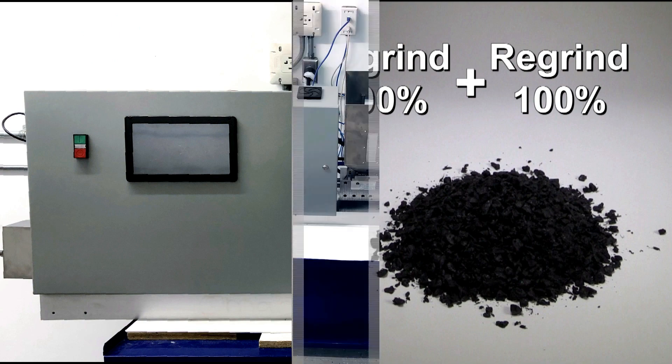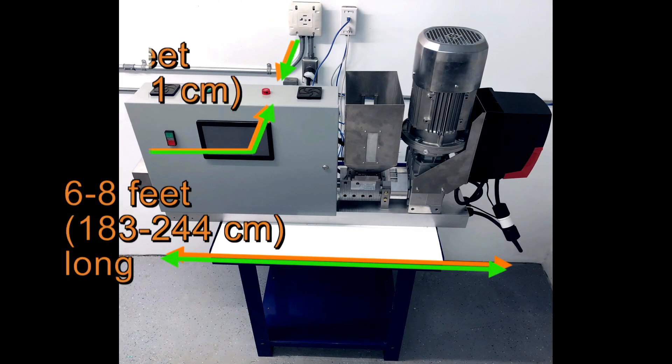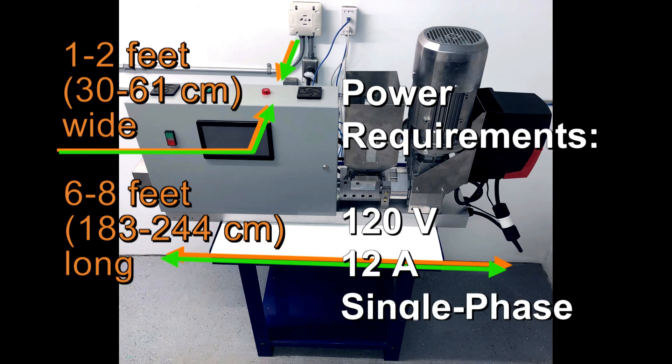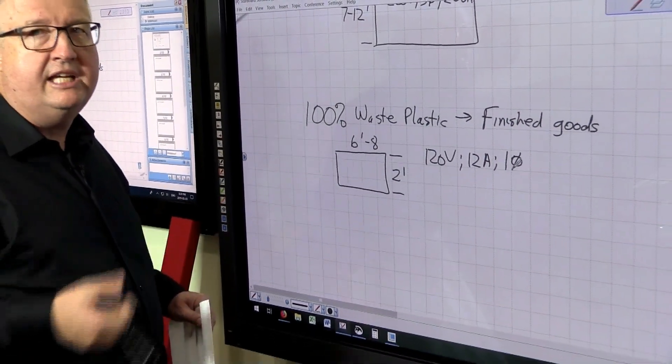So we're talking about a machine that is about 6 feet to 8 feet long total, 2 feet wide, runs on 120 volts, 12 amps, single-phase power, so normal household power, plugs in, uses as much power as say a household electric heater.